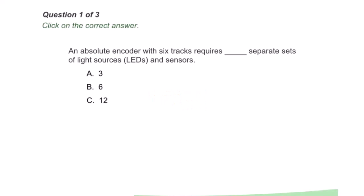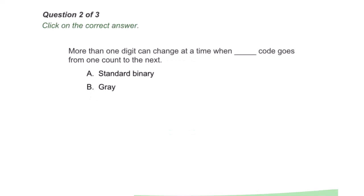To provide better resolution, some gray code wheels have more than four tracks that represent more than four bit words. Question one of three: An absolute encoder with six tracks requires how many separate sets of light sources, LEDs, and sensors? B, six. Question two of three: More than one digit can change at a time when what code goes from one count to the next?